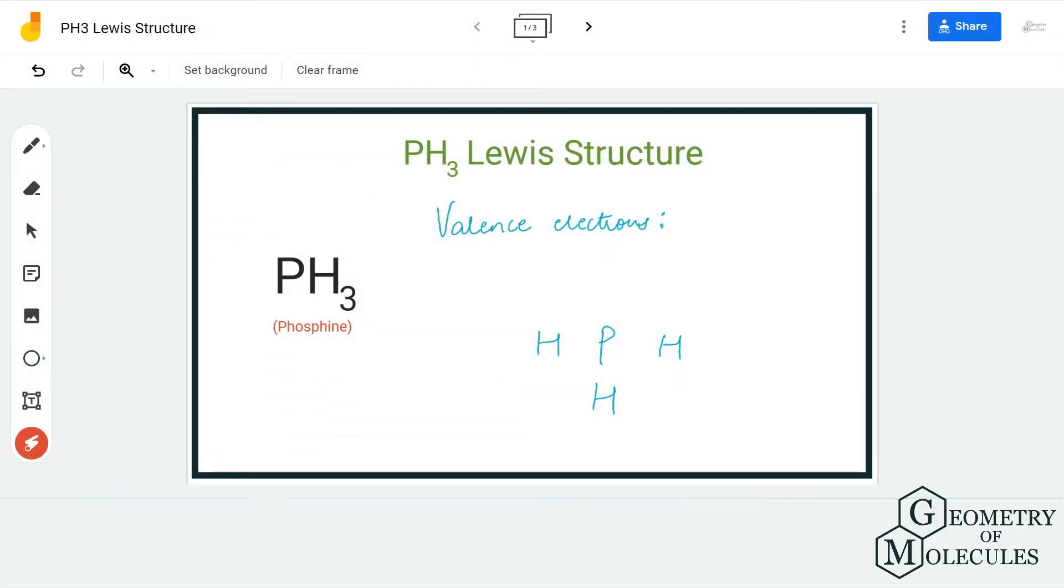Hi guys, welcome back to our channel. In today's video we are going to help you determine the Lewis structure for PH3 molecule. It's a chemical formula for phosphorus trihydride, and to determine its Lewis structure we will first determine the total number of valence electrons for this molecule.